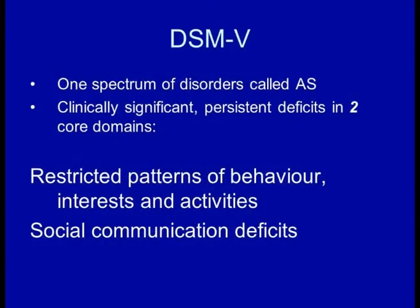Instead of having things like Asperger's Syndrome, Pervasive Developmental Disorder, and Atypical Autism, the suggestion is there's just going to be one spectrum of disorders called autism spectrum, and that the diagnosis will be made on the basis of significant deficits in just two core domains. One of these is restricted patterns of behaviour, interests and activities, so repetitive behaviours and so forth. But the other major category is the social and communication deficits found in autism.